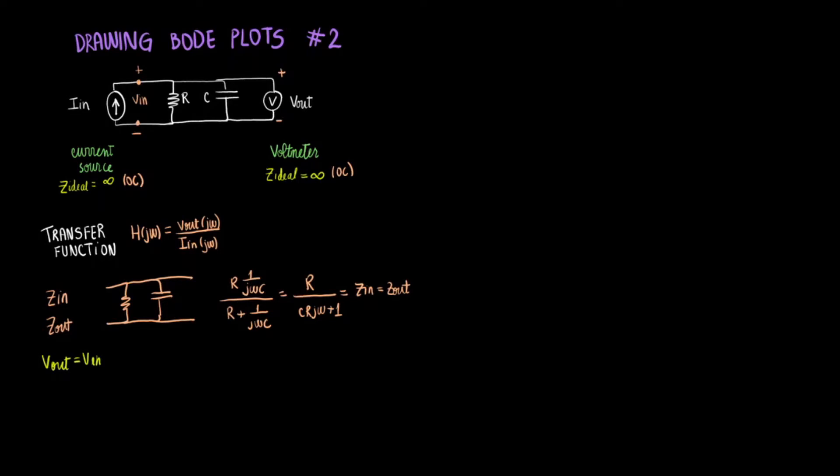This means that we can write V in equals I in times Z in. And then we can go ahead and rewrite the V in as a V out equals the I in times the Z in.